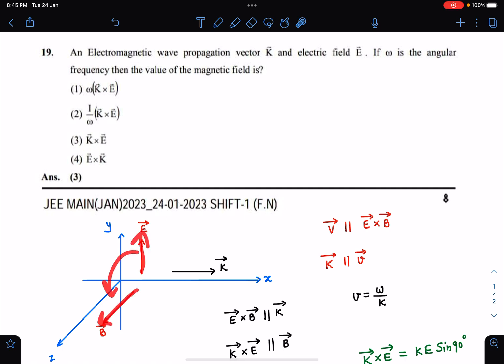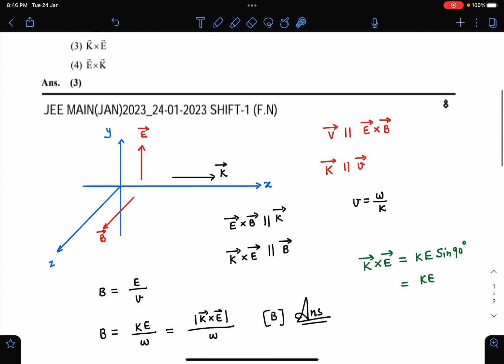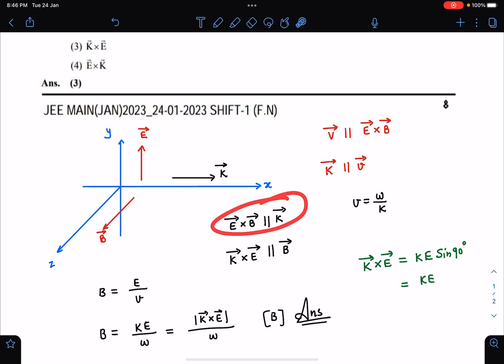E cross B will be the direction in which the wave will travel, so that is the direction of K vector, the propagation vector, or you can say parallel to vector v. At the same time, E cross B we can say will be parallel to v, and we know that speed here is ω/k, so you can write the speed of light also.